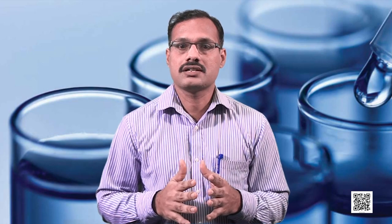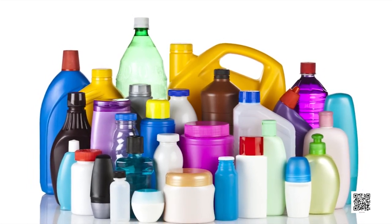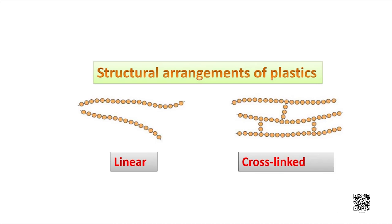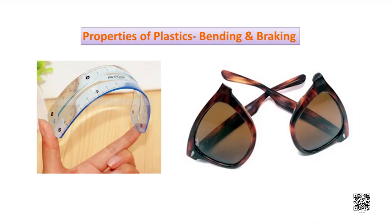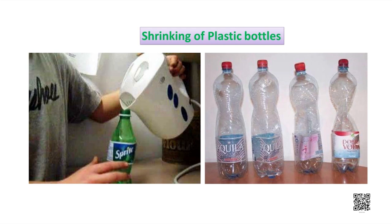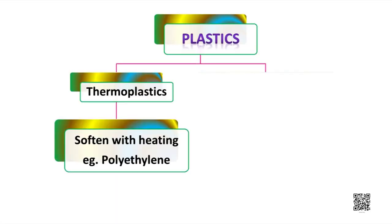So far we have discussed synthetic fibers. Now we will discuss plastics. We use many plastic materials in our day-to-day life, available in different sizes and shapes. Like synthetic fibers, plastic is also a polymer — polythene is an example. In some plastics the arrangement is linear, whereas in others it is cross-linked. Some plastics bend easily, while others break when forced to bend. Plastics that deform when hot water is added are known as thermoplastics.